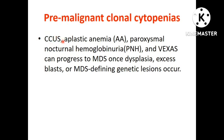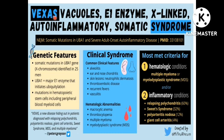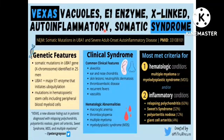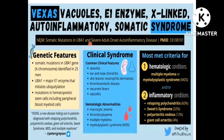Pre-malignant clonal cytopenias — including aplastic anemia, PNH, and VEXAS — can progress to MDS. VEXAS stands for Vacuoles in Erythroid or myeloid series, E1 enzyme, X-linked, Autoinflammatory, Somatic syndrome, which is due to somatic mutations in the UBA1 gene causing severe adult-onset autoinflammatory disease. UBA1 is the major E1 enzyme that initiates ubiquitylation.